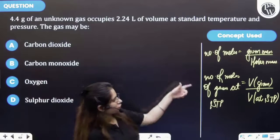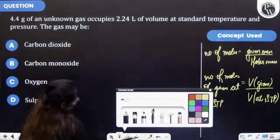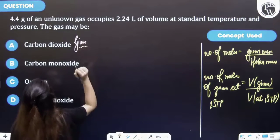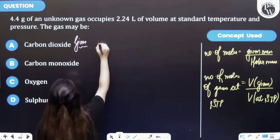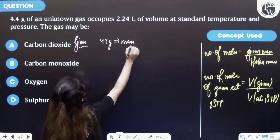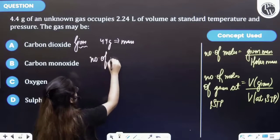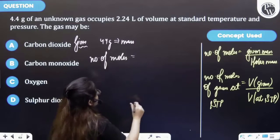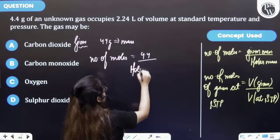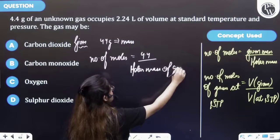Now by using these two formulas let's do our question. So in question we have given that the mass is 4.4 gram, right? So let's firstly find the number of moles from the first formula. Number of moles will be equal to 4.4 gram upon molar mass of gas that we have to find out.